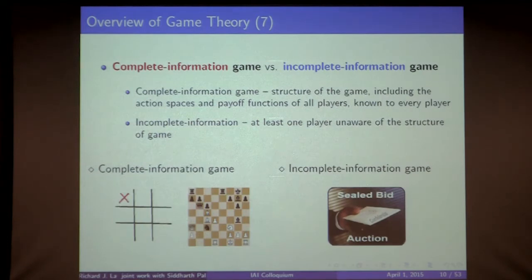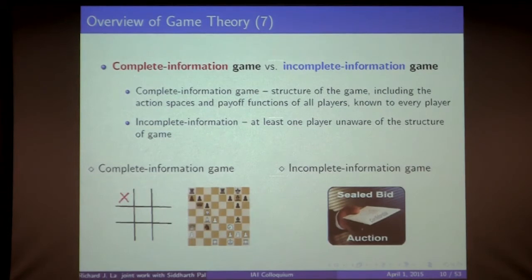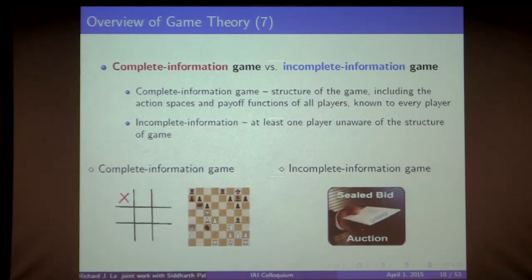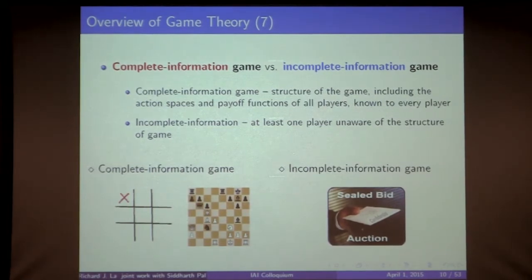A game can be complete or incomplete information. A complete information game means the structure is known to all players — every player knows the set of players, the set of available actions, and the payoff functions of everyone. If the structure is not known to at least one player, it's an incomplete information game. An example of complete information is tic-tac-toe or chess, where rules are known to both players. A sealed bid auction is incomplete information because participants may not know who is bidding or the others' valuations.